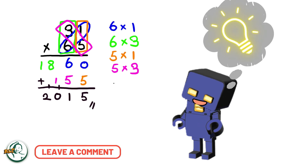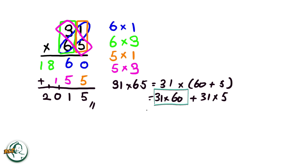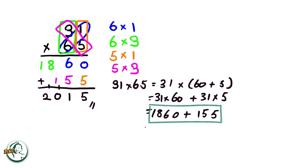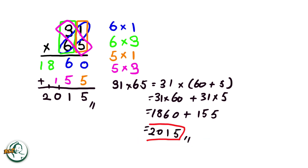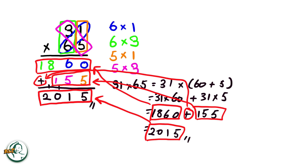Let's dive into the rationale behind this method. Consider 65 as 60 plus 5. We can express 31 times 65 as 31 times (60 plus 5). This expands into 31 times 60 plus 31 times 5. Calculating, we get 1860 for 31 times 60, and 155 for 31 times 5. Adding these results together, 1860 plus 155 equals 2015. This explains why we need to add these two numbers here in the column method.